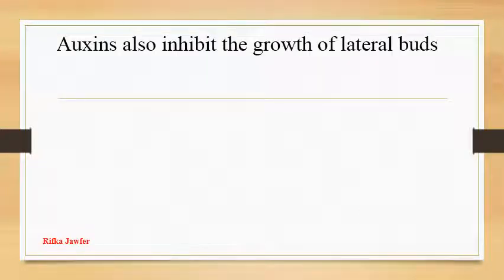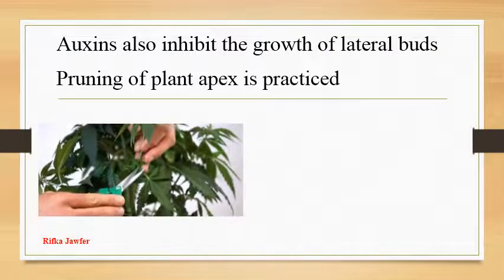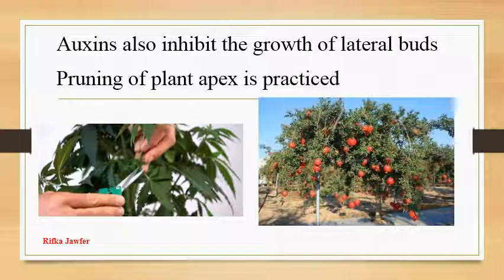Auxins also inhibit the growth of lateral buds. So pruning of plant apex is practiced in horticulture to maintain bushy plants, specially in plants like pomegranate.